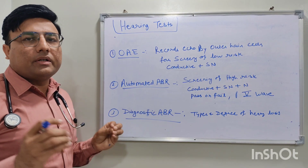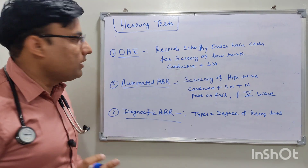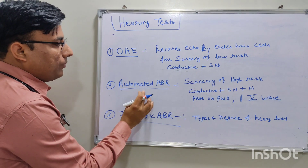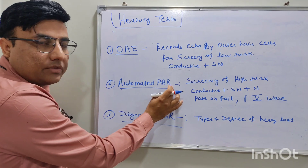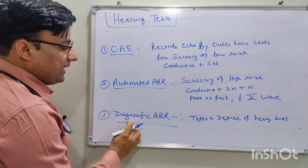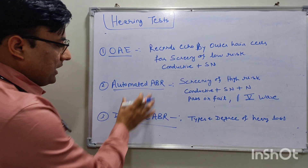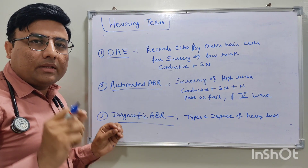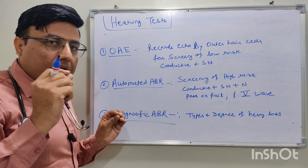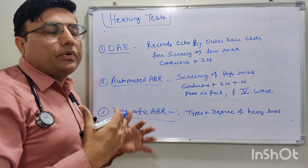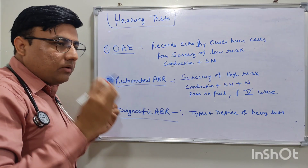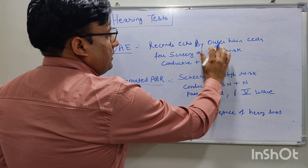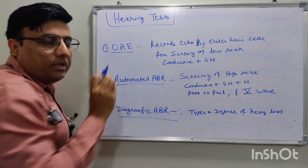Now, the different types of hearing tests: mainly three types are used in newborns. First is OAE — otoacoustic emissions. Second is automated ABR — automated auditory brainstem response. Third is diagnostic ABR — diagnostic auditory brainstem response. In OAE, a microphone is inserted in the ear canal, sound stimuli are given, and echoes produced by the outer hair cells are detected.